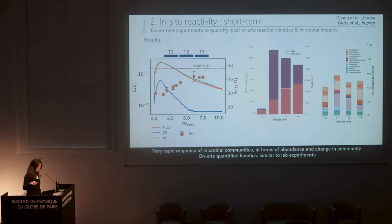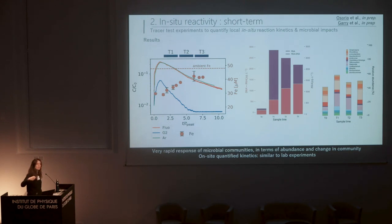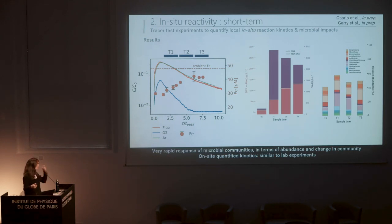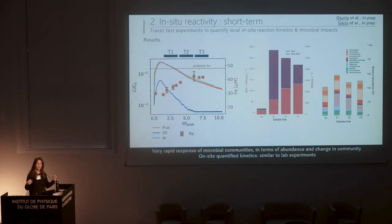To conclude on this study: we showed a very rapid response of the microbial communities both in terms of abundance and community change. Based on this data, we were also able to quantify the kinetics, and interestingly the reaction rate we quantify is very similar to the one first derived in lab experiments. So that doesn't directly answer the question of lab-field discrepancy, but it's the first reaction rate estimation made directly in the field. This is a short-term evaluation of kinetics, but these moments where oxygen arrives in the ground are very rare, so the question becomes: what is the reaction rate on the long term?